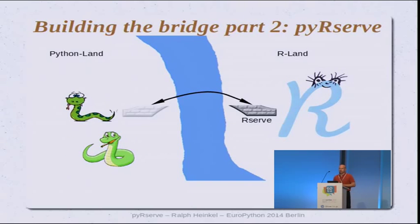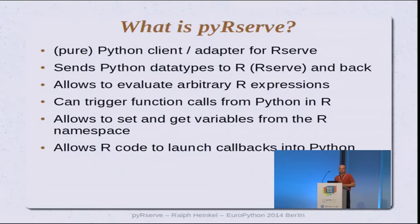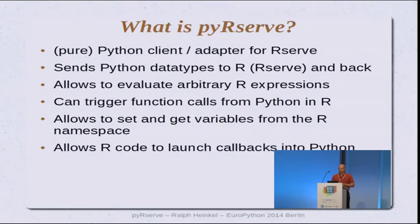The second piece of that bridge is PyRserve — that's the part I have been writing. It's a pure client adapter for connecting via TCP/IP to R-Serve. It serializes Python data objects over the network and sends them to R. R can do calculations with them, and the serialized result data is deserialized on the Python side, creating native Python result objects. It allows evaluating arbitrary R commands, triggering function calls, setting and getting variables in the R namespace, and a latest addition lets R code trigger commands in your Python interpreter.